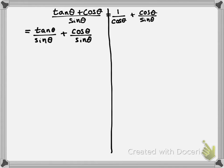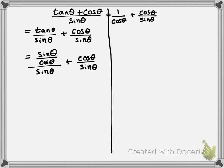Now that I've split this into two fractions being added together, I also notice that on the left side I've got tangent of theta, but on the right side I only have sine of theta and cosine of theta. So I want to get rid of that tangent of theta, and the easiest way to do that is to replace it with sine of theta over cosine of theta. So now I'm going to have sine of theta divided by cosine of theta — that's replacing tangent of theta — and that is being divided by sine of theta, plus cosine of theta divided by sine of theta.